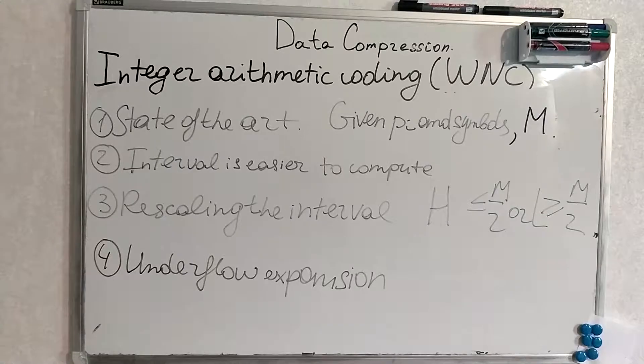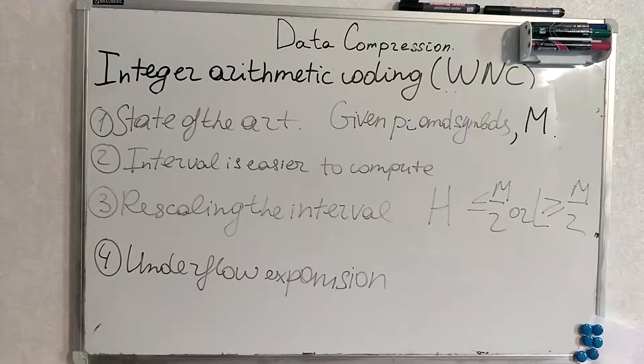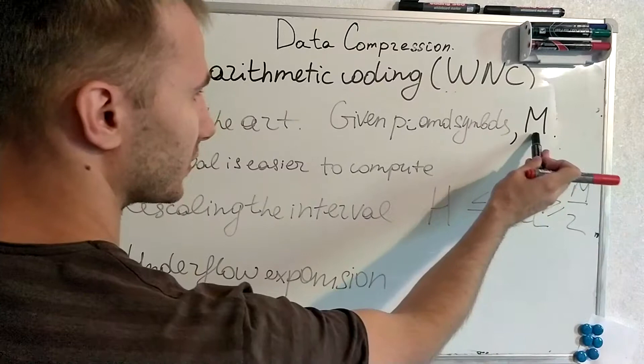And current state-of-the-art technique, its name is integer arithmetic coding. It works as arithmetic coding but with some upgrades, some modifications. So we are given probabilities and symbols and some m parameter m.